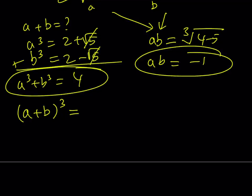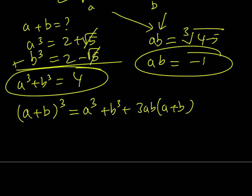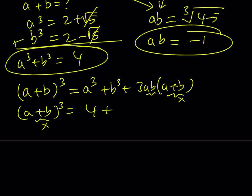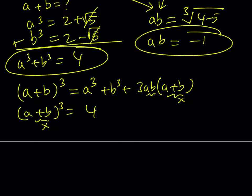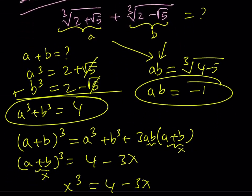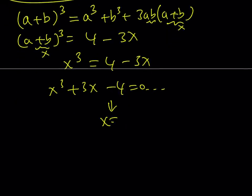I can take a plus b and cube it. I can write this as a cubed plus b cubed plus 3ab times the quantity a plus b — from the binomial theorem, 3a squared b plus 3ab squared in the middle, factored out. I know a cubed plus b cubed equals 4, and I'll call a plus b as x. Since ab equals negative 1, this becomes 4 minus 3x, and the whole thing equals x cubed. This gives you the exact same cubic equation as before, and solving for x gives the same answer: 1.